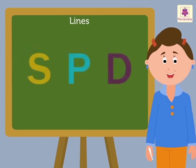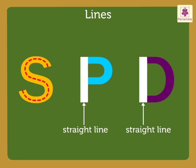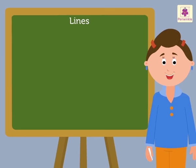Now let us look at a few capital letters that are made using straight and curved lines. Look at letter S. It is made up of a curved line. Now look at the letters P and D. They are made of a straight line and a curved line. Now let us look at a few objects that are made of lines.